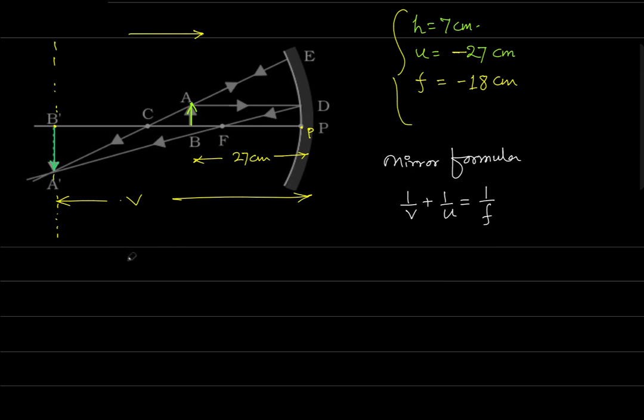If we put values, then we will have 1 by v plus 1 upon minus 27. It should be equal to 1 by f, 1 upon minus 18. When we solve this, we will have 1 by v equals to minus 1 upon 18 plus 1 upon 27. Calculation is a very important part.